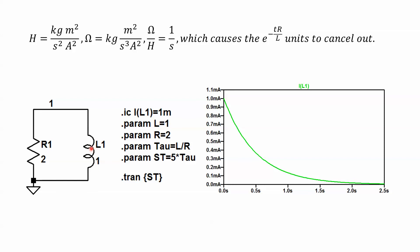Make the parameter of the L one, resistor two ohms. I can calculate what tau is, and then I can set my simulation time to be automatically five times that.